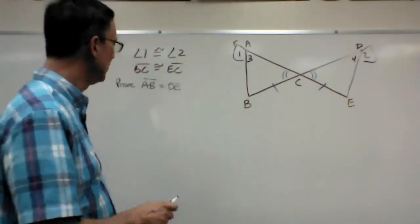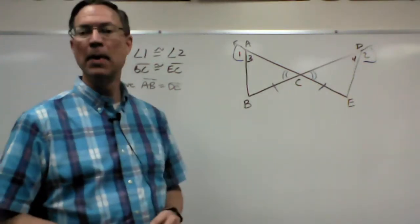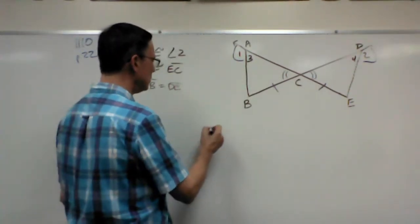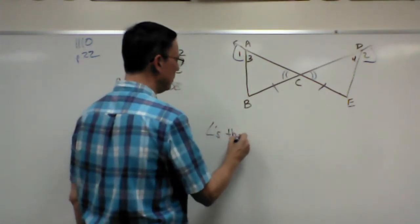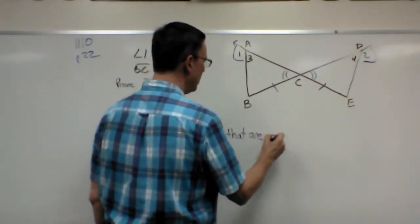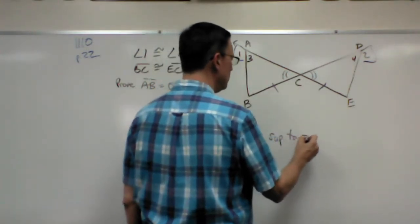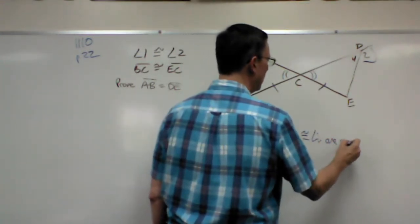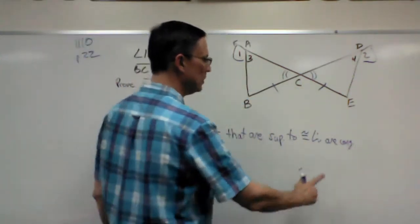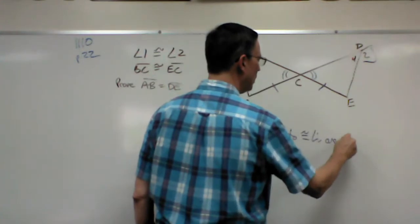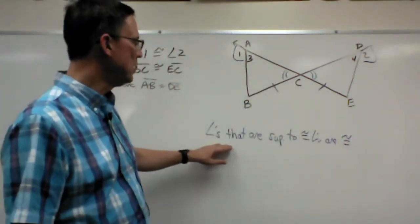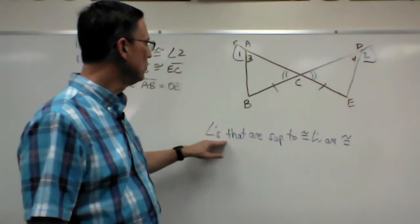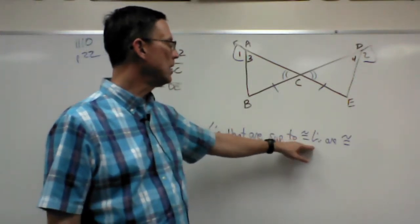And you notice that Postulate 11 says that angles that are supplementary to congruent angles are congruent. So we can say angles that are supplementary to congruent angles are congruent. Okay, or we could even just, rather than use the word, we can use abbreviations and symbols to kind of summarize that Postulate 11.